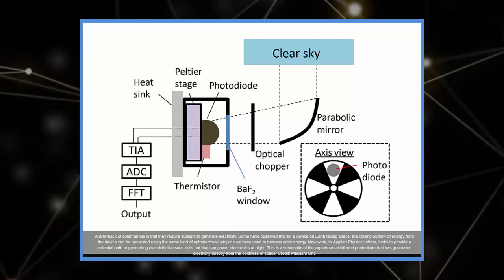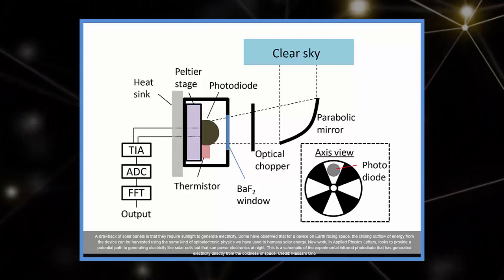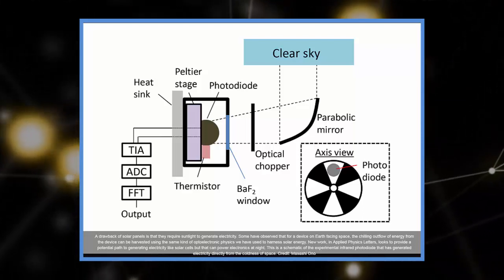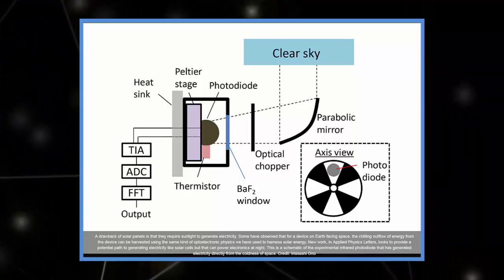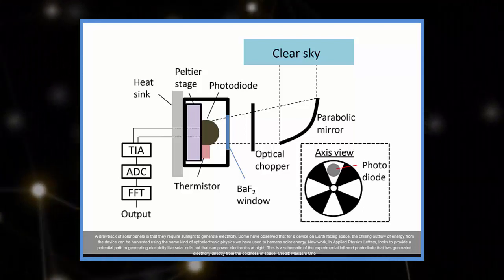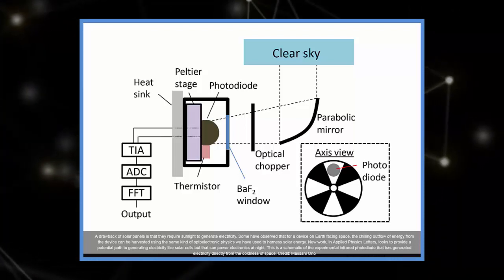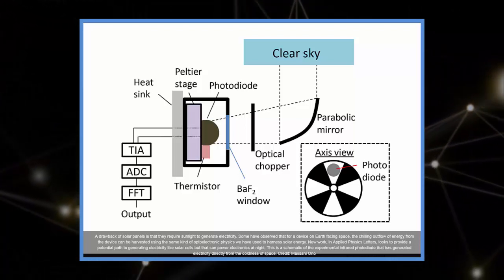Calculations made after the diode created electricity showed that, when atmospheric effects are taken into consideration, the current device can theoretically generate almost 4 watts per square meter, roughly 1 million times what the group's device generated, and enough to help power machinery that is required to run at night.